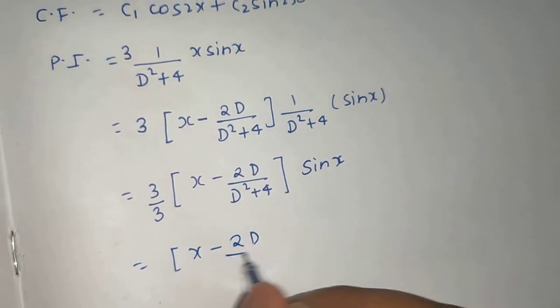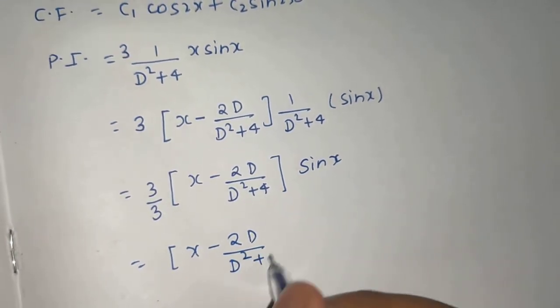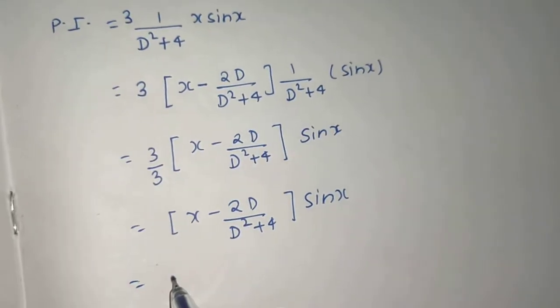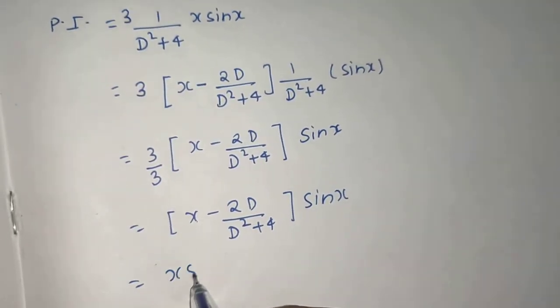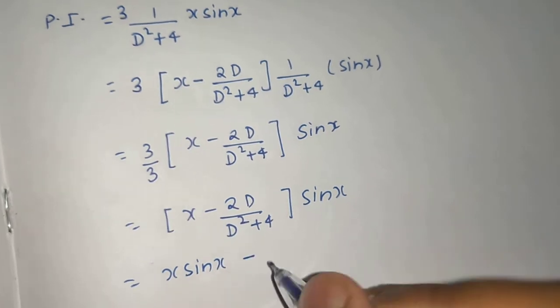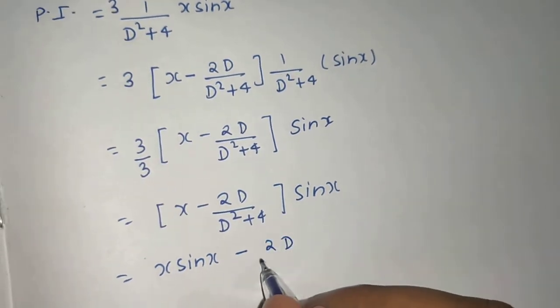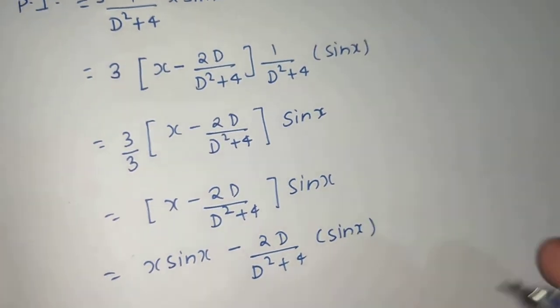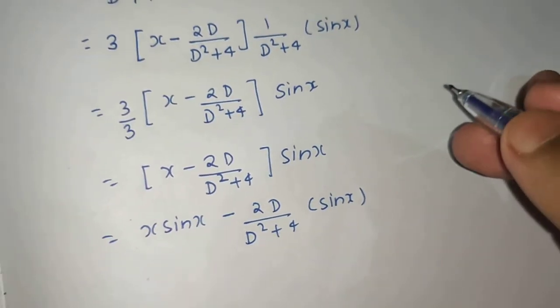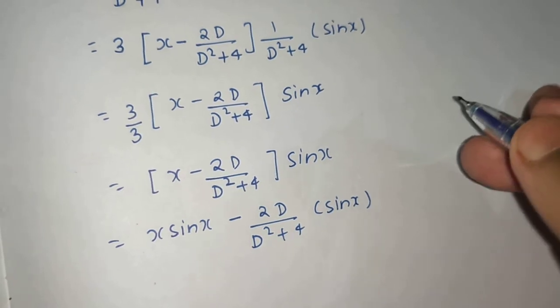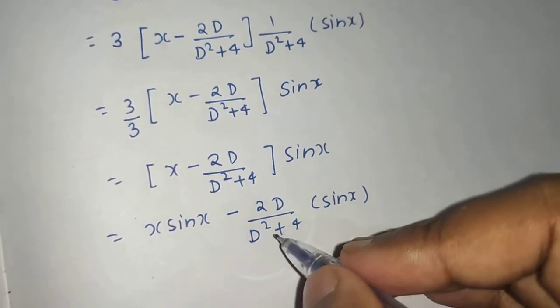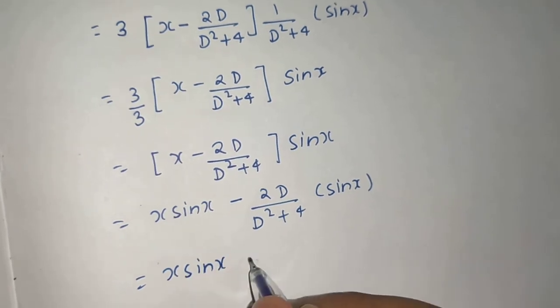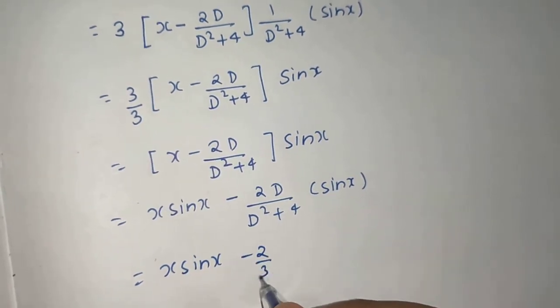x - 2D/(D² + 4) operating on sin(x). I can multiply sin(x) inside. So x·sin(x) - 2D/(D² + 4) operating on sin(x). Again, a² is 1, minus of a² is -1, 4 - 1 is 3.